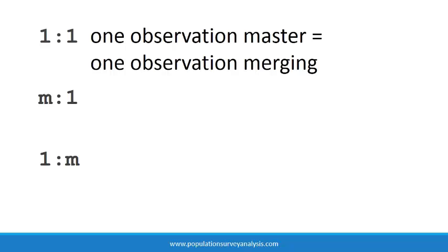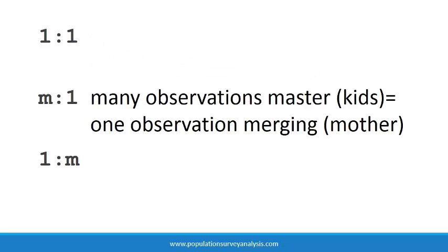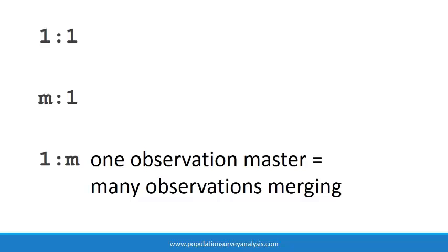One-to-one means that there is one observation in the master dataset for each observation in the merging dataset. It is possible that some observations will not match, but there are no duplicated IDs in either dataset. If we were merging mother data onto kid data, then we would have a many-to-one merge because there are many kids per woman. A one-to-many merge would be the opposite.